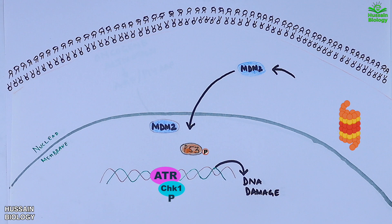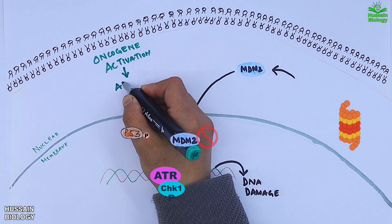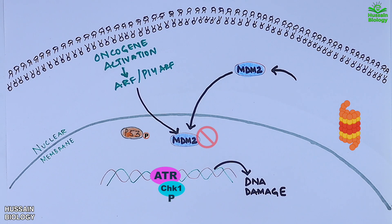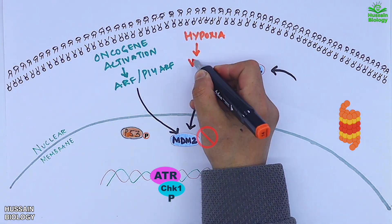Moreover, there are other pathways also that inhibit the MDM2 molecule, like oncogene activation that activates ARF which in turn inhibits the MDM2 molecule. Second way is via hypoxia, and then we have the nuclear stress driven through RPL5 molecules.